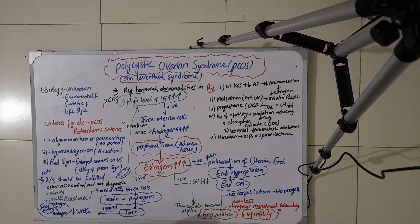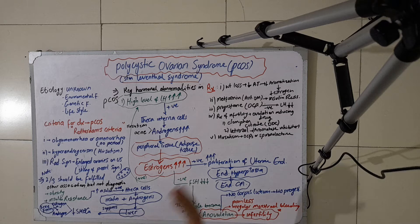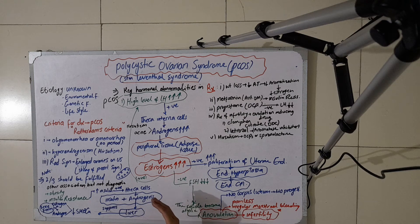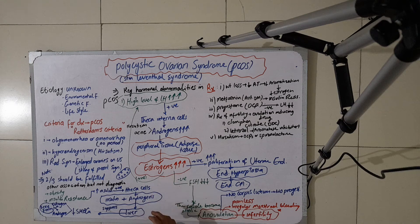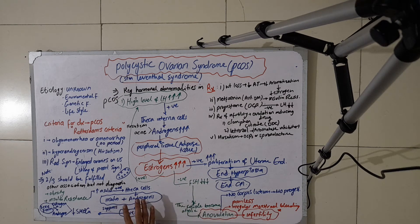Now let us discuss insulin resistance. In insulin resistance, there will be high levels of insulin, which give positive stimulation to the theca cells, resulting in high androgen production. These androgens are again transported to peripheral tissue, where they are converted into estrogens by aromatization, and the subsequent steps are the same as described above.